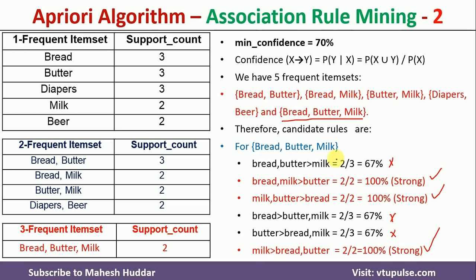This is how you generate frequent itemsets, produce association rules, and select strong association rules based on the minimum confidence. I hope the concept is clear. If you like the video, please like and share with your friends, press the subscribe button for more videos, and press the bell icon for regular updates. Thank you for watching.